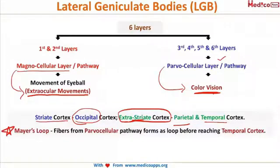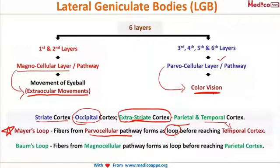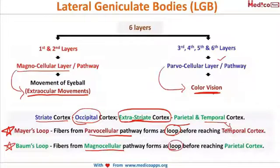An important exam point: Meyer's loop consists of fibers arising from the parvocellular pathway which form a loop before reaching the extra striate cortex, that is the temporal cortex. Similarly, there is another loop called Baum's loop, whose fibers come from the magnocellular pathway and form a loop before entering the other extra striate cortex — the parietal cortex.